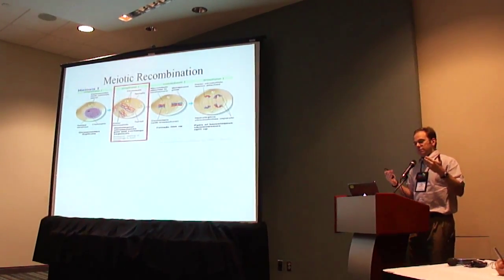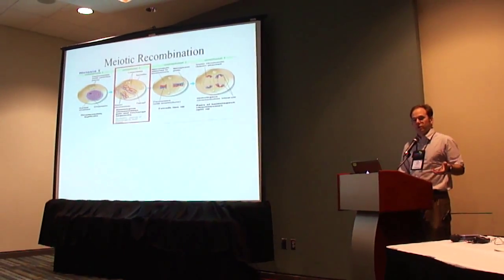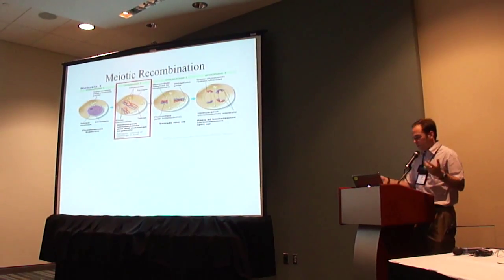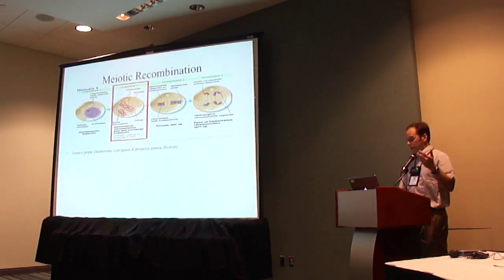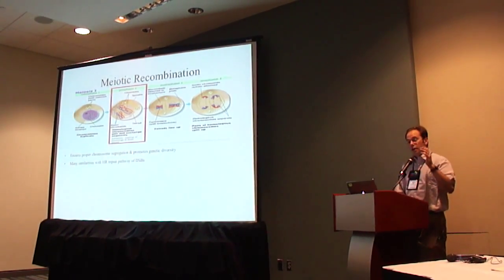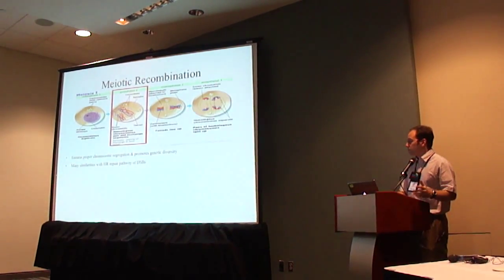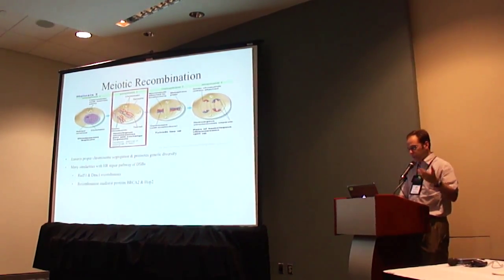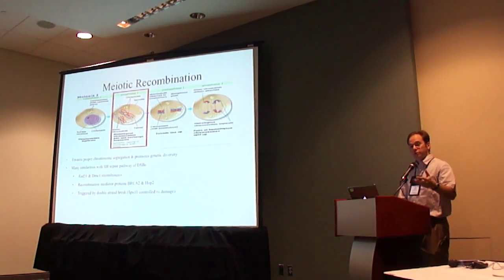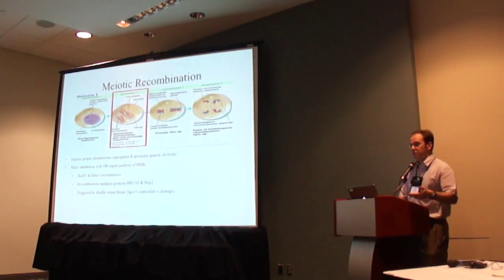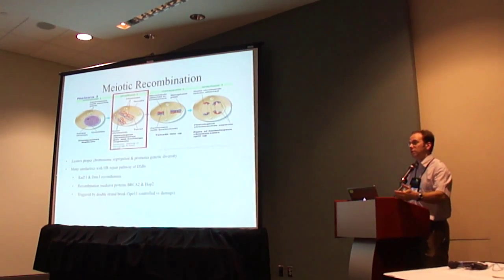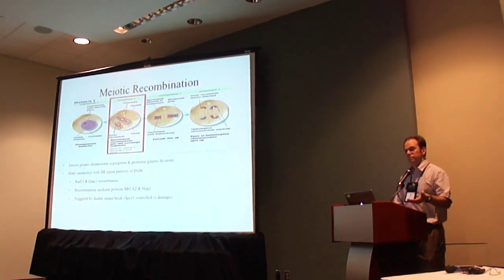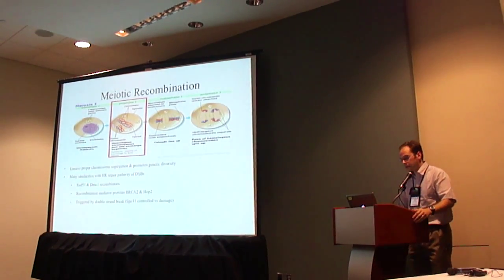There are two types of genomic recombination: meiotic recombination and the double-stranded break-repair of homologous recombination. Meiotic recombination occurs within prophase one of meiosis one. It ensures proper chromosome segregation and promotes genetic diversity. There are many similarities between meiotic recombination and the double-stranded break-repair pathway, including shared recombinases and recombination mediator proteins. Both are triggered by a double-stranded break, although meiotic recombination is triggered by a controlled break by SPO11, whereas double-stranded break-repair is triggered by an accidental or stress break caused by DNA damage.